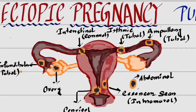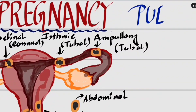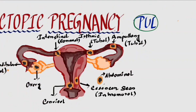What is ectopic pregnancy? Ectopic pregnancy is defined as PUL. What is PUL? PUL means pregnancy of unknown location.